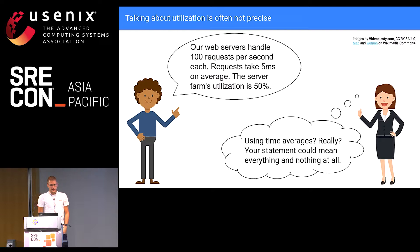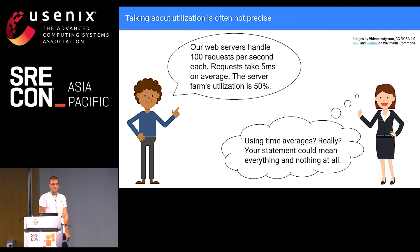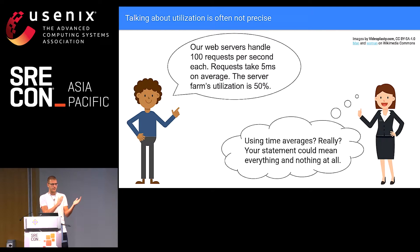Here's a common problem I've observed. When we talk about utilization, the way we talk is often not very precise. Joe says: our web servers handle 100 requests per second each, requests take five milliseconds on average, the server farm's utilization is 50%. These might all be true statements. But Jane very correctly thinks: you're using time averages? That statement could mean everything and nothing. 100 requests per second is an average, meaning one every 10 milliseconds on average. They take five milliseconds on average to process — because you're busy 5ms out of every 10ms, you have 50% utilization.